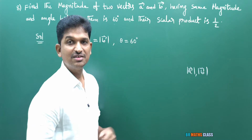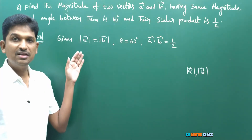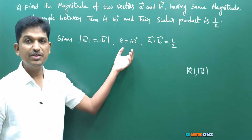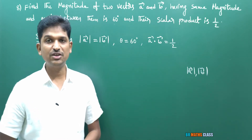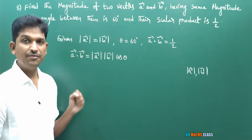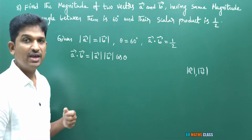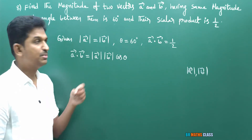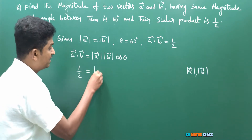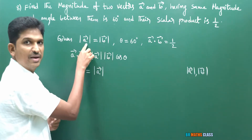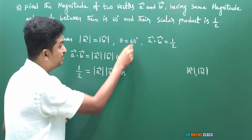We know dot product is also known as scalar product. Using the formula A̅ · B̅ = |A̅||B̅|cos θ, I substitute the given information: 1/2 = |A̅| × |A̅| × cos 60°, since |B̅| = |A̅|. This gives 1/2 = |A̅|² × (1/2), so the 1/2 cancels and we get |A̅|² = 1.